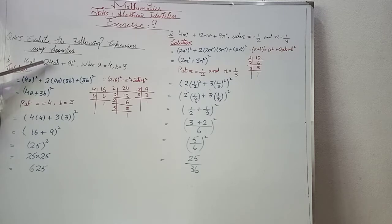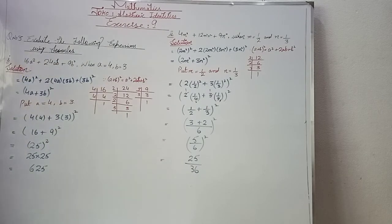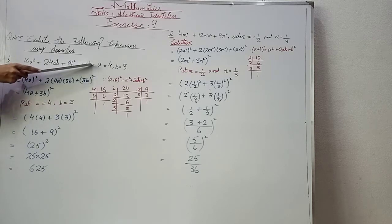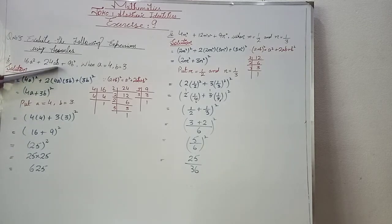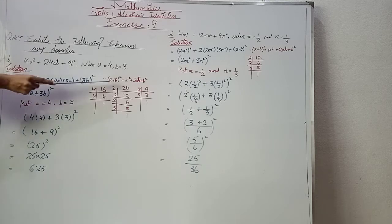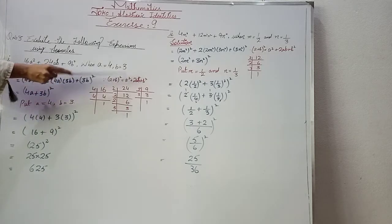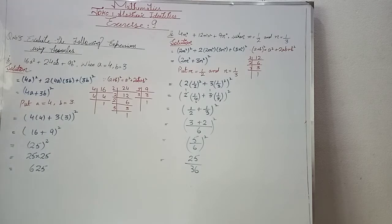The first part is: 16a² + 24ab + 9b², when a = 4 and b = 3. You have an expression and given values. The requirement is to solve it using a formula. Because all signs are positive (plus), we use the identity (a + b)² = a² + 2ab + b².